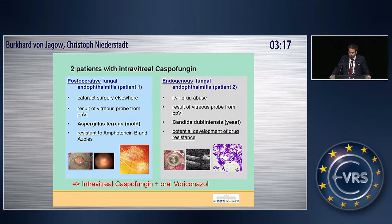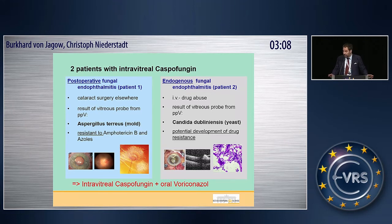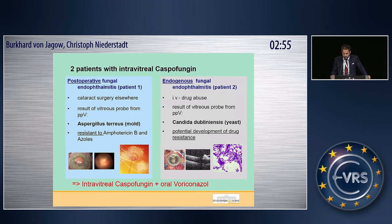The main reason was my first patient. He had a postoperative endophthalmitis after cataract surgery, and the result of his vitreous probe was Aspergillus terreus — a mold with natural resistance to amphotericin B and the azoles. So I chose caspofungin for treatment.